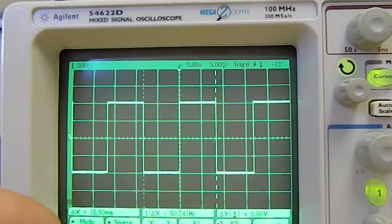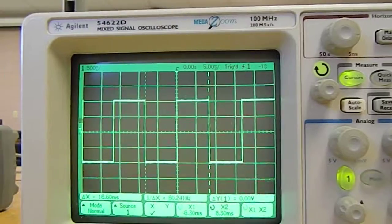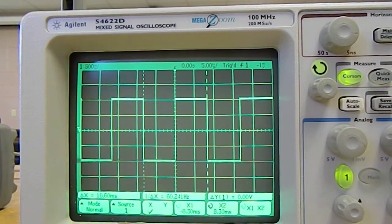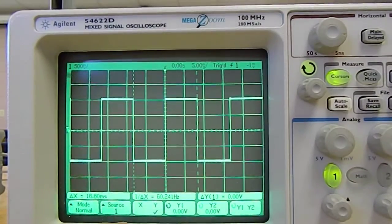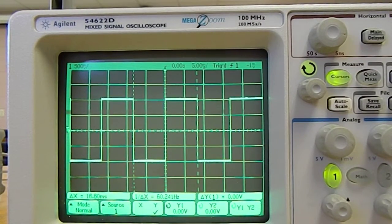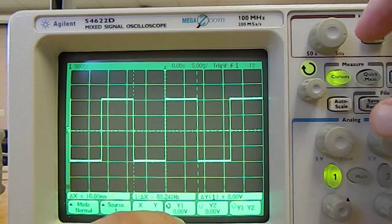So you can do a similar thing with measuring amplitude, and the way that you do that is to choose the Y cursor, so you come back to here, click Y. And what you want to do then, once you have done that, is choose Y1.